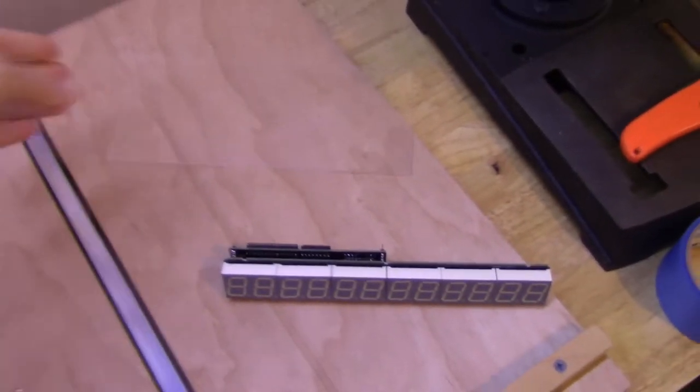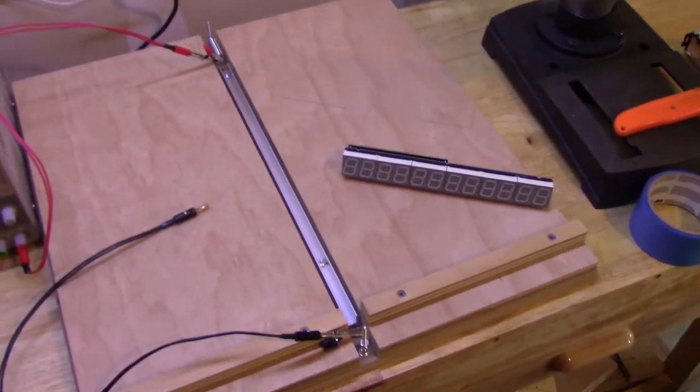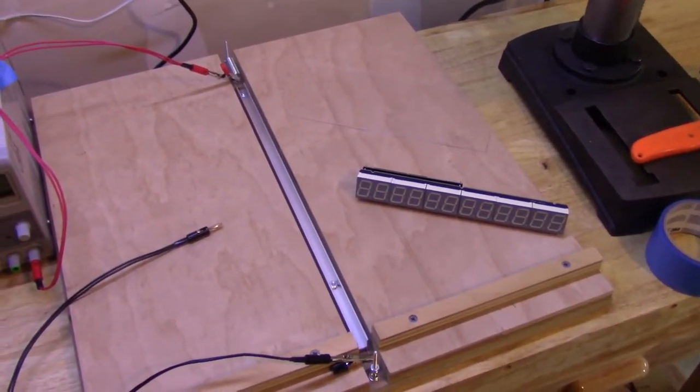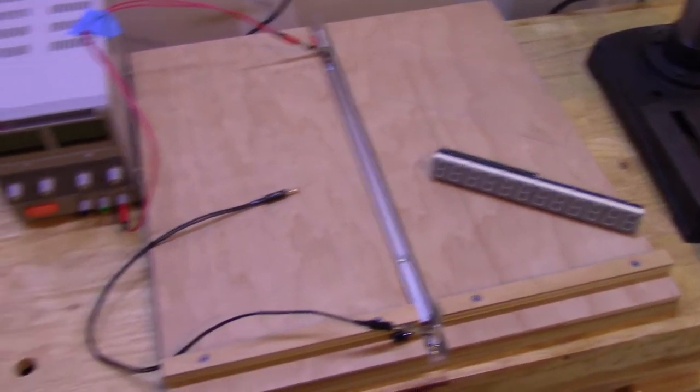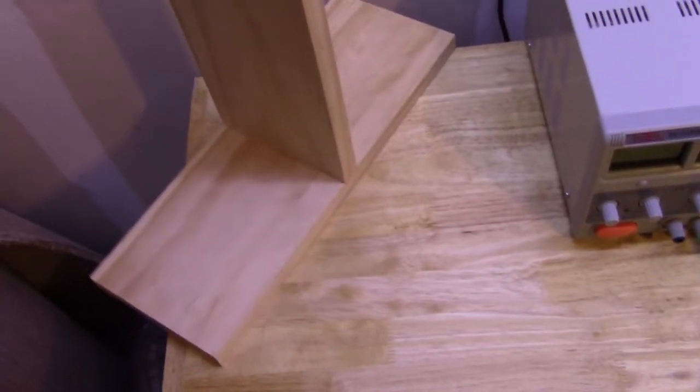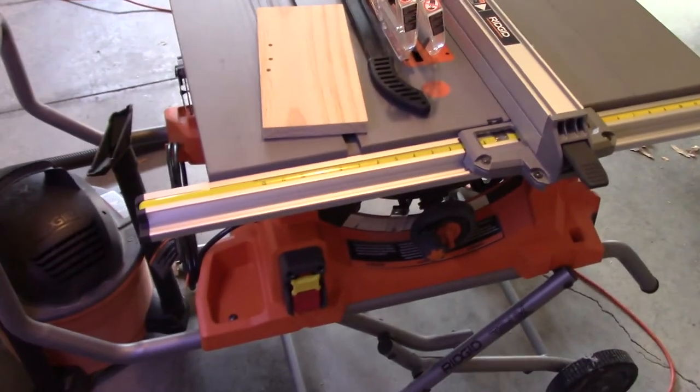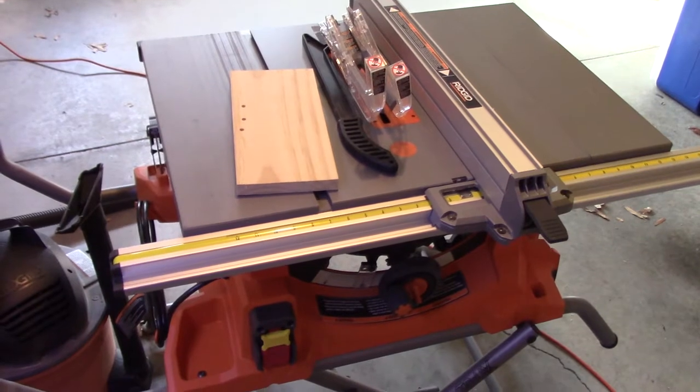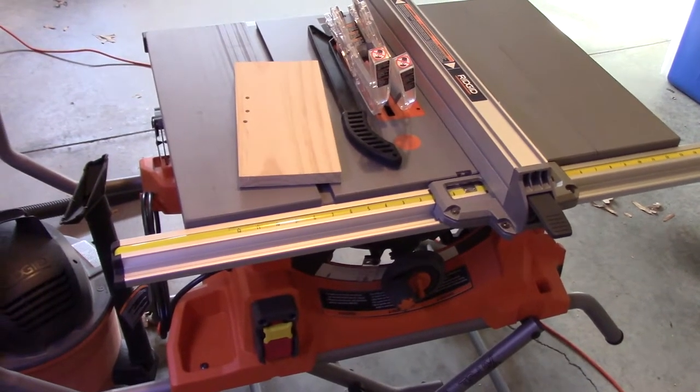Once you get a certain portion of that really hot, then you can press the piece of acrylic into a form, either a 90 degree form like this, or what we're actually going to make on the table saw is a slightly different angle. We're going to go for about a 30 degree bend.